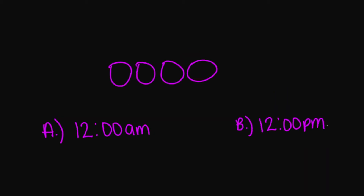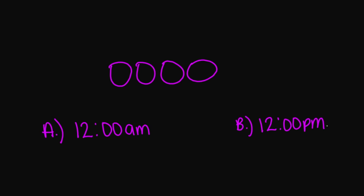So now let's look at 0000 hours. Is this going to be A, 12 a.m. midnight, or B, 12 p.m. the afternoon? And this is going to be A, 12 a.m., which is midnight. Remember, some parts of the military you may see 2400 hours to represent 12 a.m.